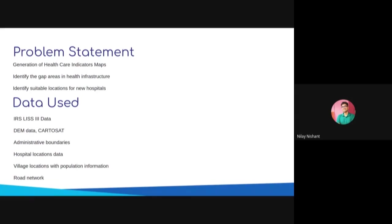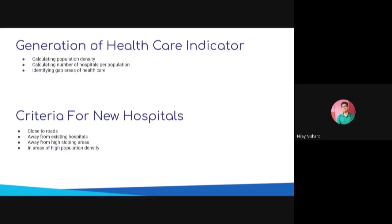If time permits, we can also find suitable locations where new health infrastructure can be established. The IRS datasets and Cartosite data products will be used, along with administrative boundaries, hospital datasets, village locations with population information, and road networks. This is a two-phase statement: for the healthcare indicator, we will calculate population density and number of hospitals per population, identify gap areas, and for new hospital criteria consider proximity to roads, distance from existing hospitals, avoidance of sloping areas, and high population density zones.